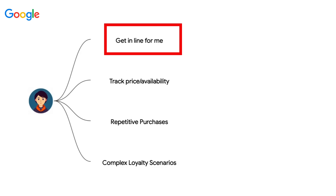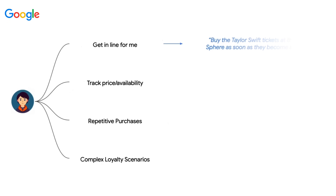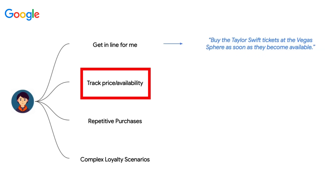One of the first ways that Google has proposed this being used is where you want an agent to be able to go and stand in line for you to buy tickets or something. So imagine you've got a Taylor Swift concert coming up, tickets are going on sale at a certain time of day, you want your agent to just stay online, and the moment the tickets become available it can reserve and pay for those tickets.